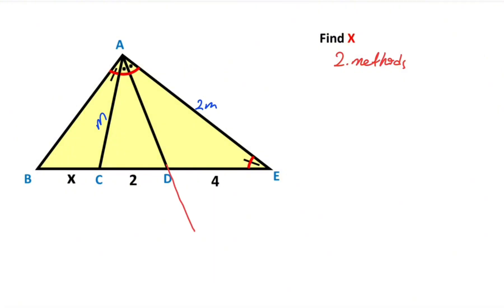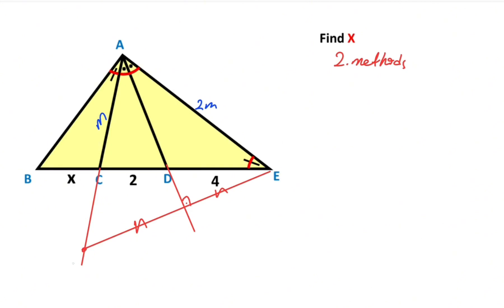After that, let's extend corner D and corner C like this, because I want to create an isosceles triangle. So here must be equal 90 degrees, and these two parts must be equal to each other. Let's call this point K. So triangle KAE is an isosceles triangle. Therefore, this length is also 2M, and M units remain here.